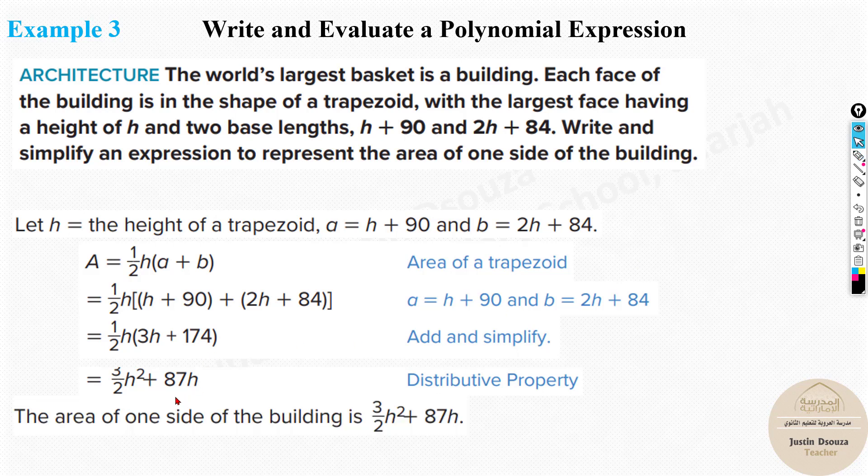So, that is basically the area of one side of the building. So, this is how we solve this problem. You need to add the polynomials and then multiply with the monomial and you will get the answer.